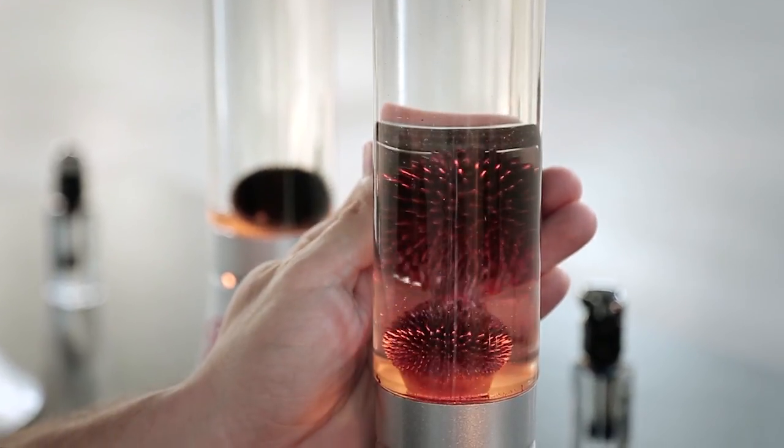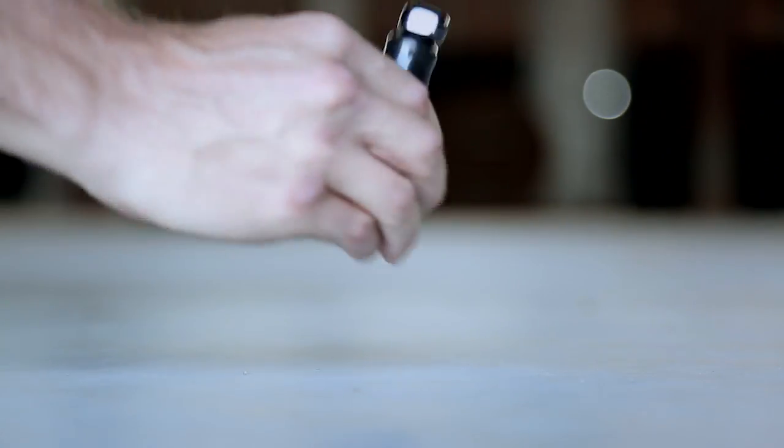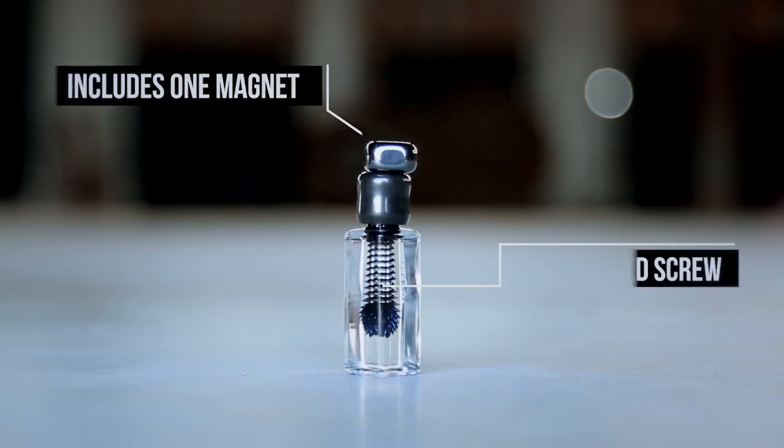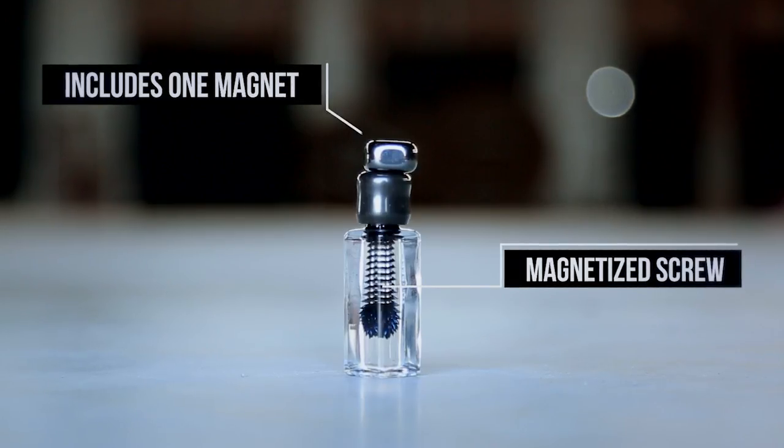This is the nano. It has a permanently magnetized screw that the ferrofluid naturally spins around.